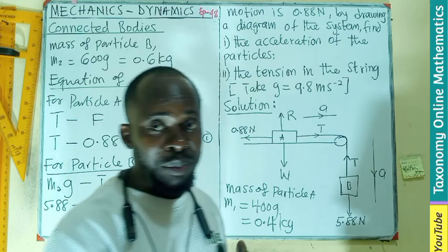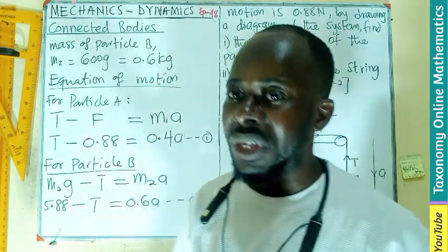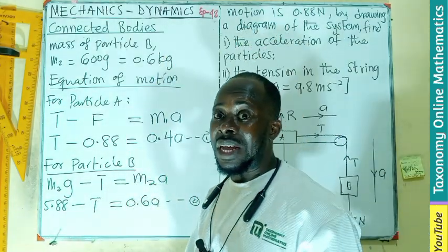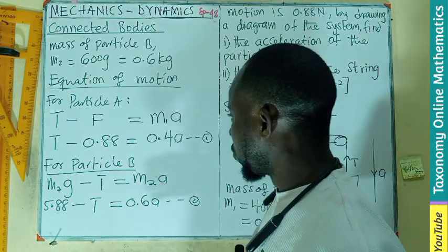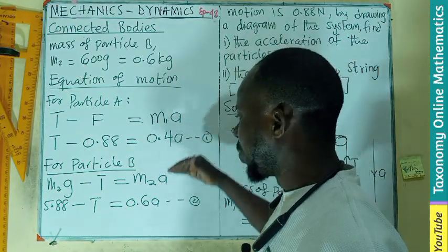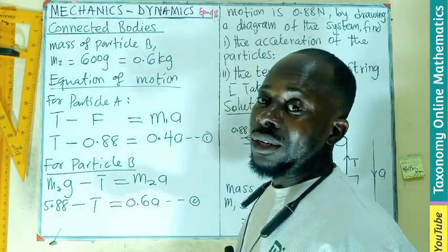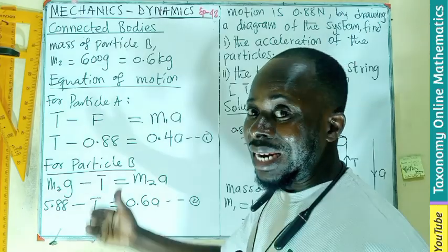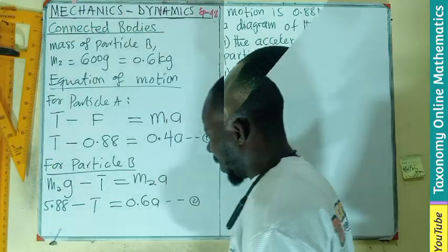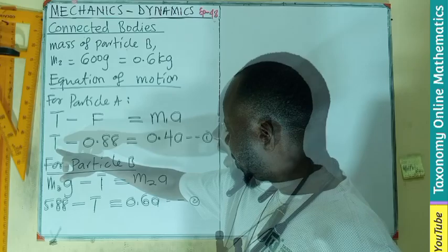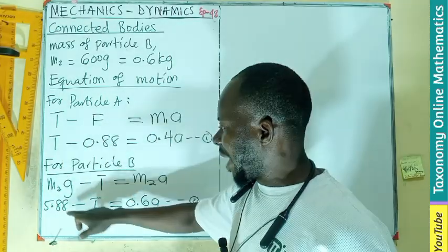Let's do substitution. This is 0.6 times g, that will give you 5.88, minus tension equals 0.6a. This is the first equation, the second equation. This episode is a little bit fast because we have already laid the foundation in episode 46 and 47.